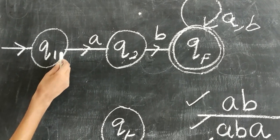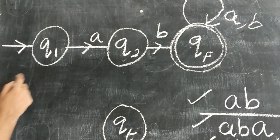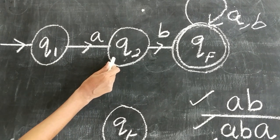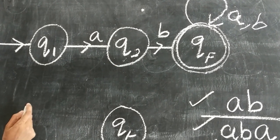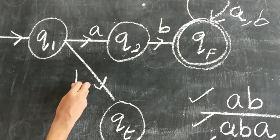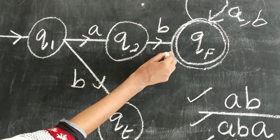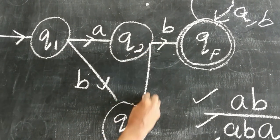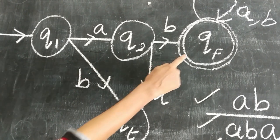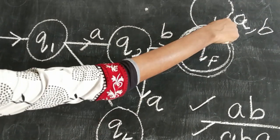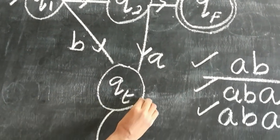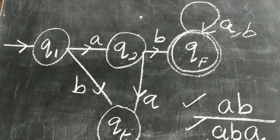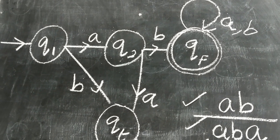We see that Q1 has a transition for A but not for B. If we give B from Q1, the string would start with B, which is not allowed since we need prefix AB. So we send transition B from Q1 to the trap state. Similarly at Q2, A cannot follow because we need A to always be followed by B at the start, so we send A from Q2 to the trap state. Q1 now has both transitions covered. For the trap state we give both A and B self-loops. This completes the DFA for all strings starting with prefix AB.